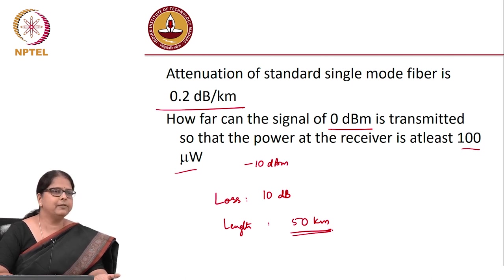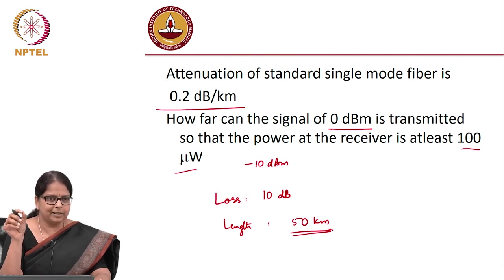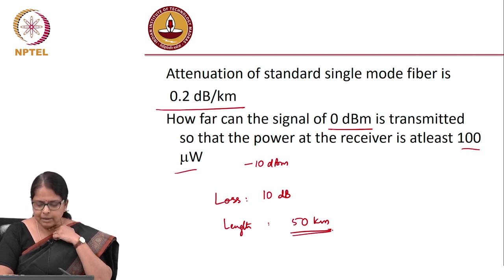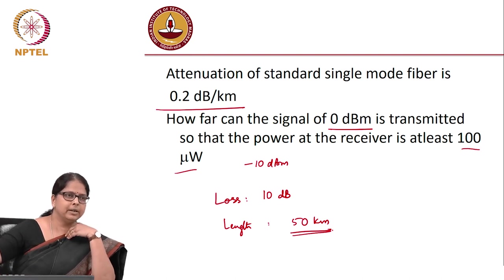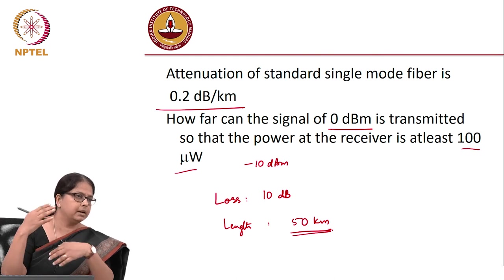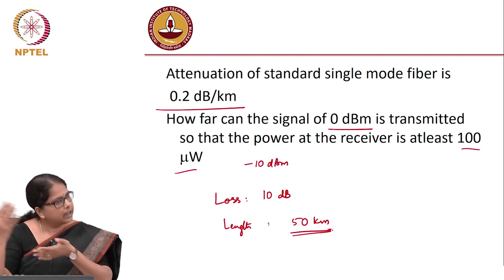Fiber manufacturers compete to reduce loss from 0.16 toward 0.158 dB/km, because every fraction of a dB gained extends transmission distance. Since one-tenth of power is lost after just 50 km, a 3000 km submarine link requires intermediate amplifiers or regenerative repeaters — devices that receive, re-modulate, and retransmit the signal.